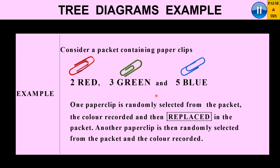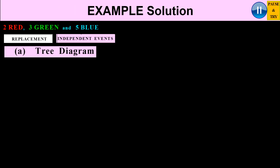We've got three questions: how can we represent this information as a tree diagram, and then two probability questions to answer. Now let's construct the tree diagram. We've got two red, three green, and five blue. We note that we replace — once we take out a paper clip, we put it back. So let's start with the first pick.